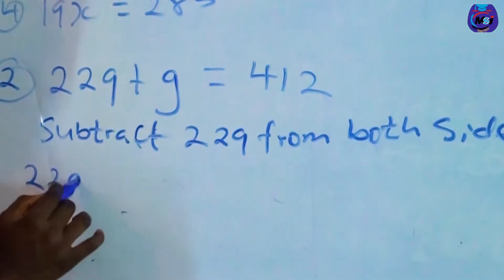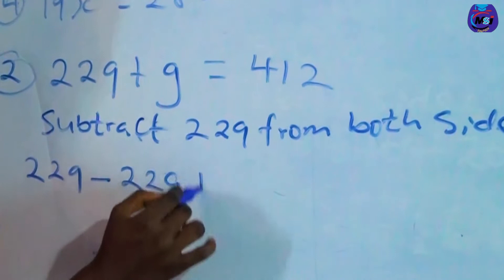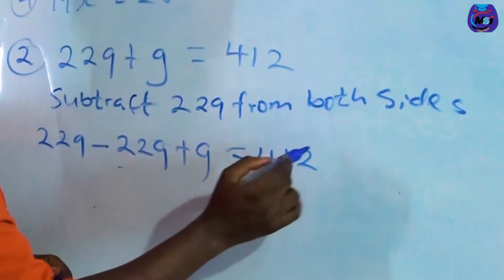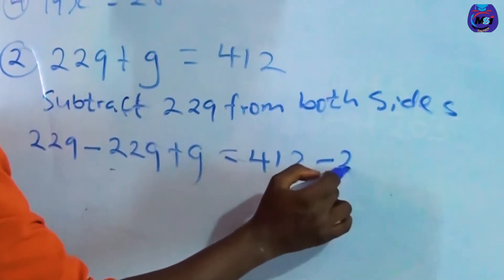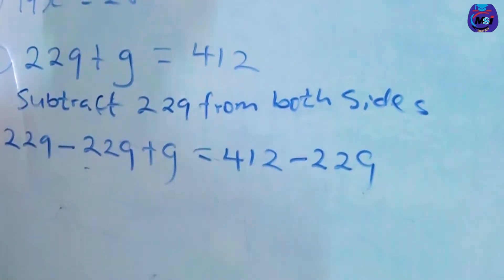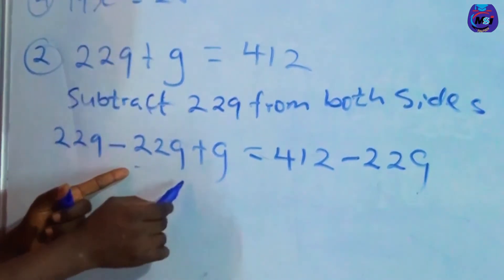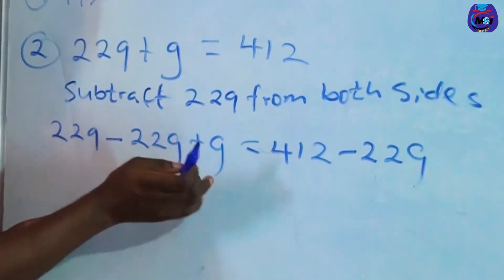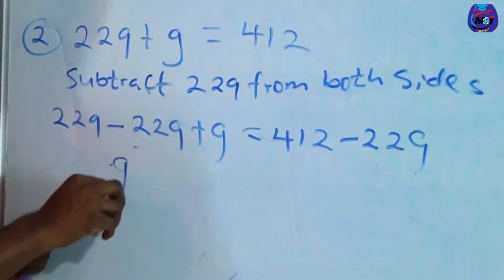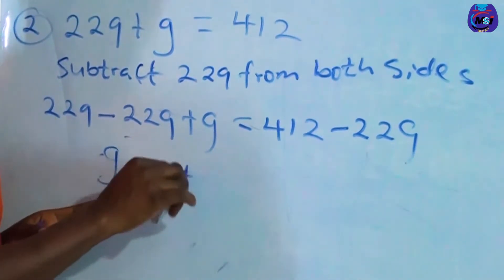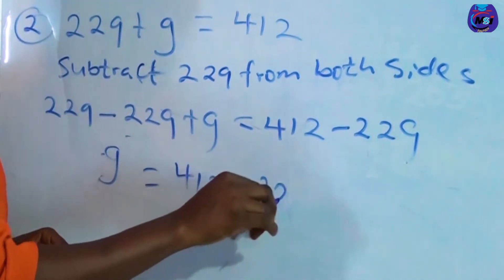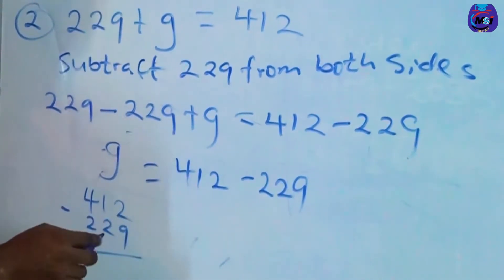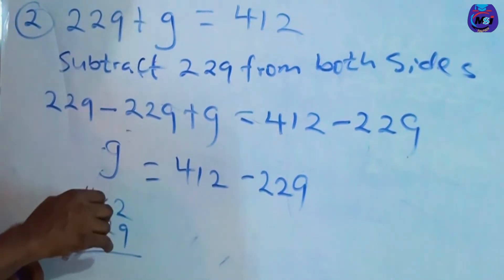229 minus 229 plus g equals 412 minus 229. 229 minus 229 is 0, so we have plus g left.